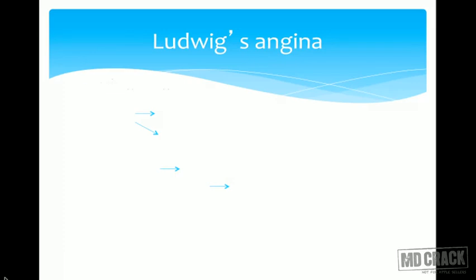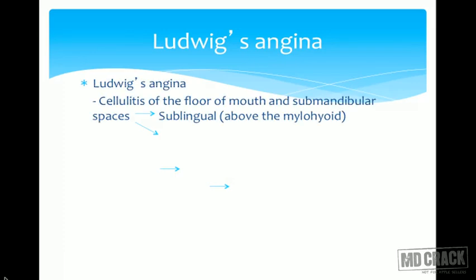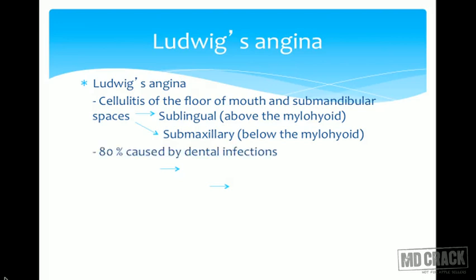Ludwig's angina is the cellulitis of the floor of the mouth and submandibular spaces. The submandibular space is divided into sublingual and submaxillary by the mylohyoid muscle. The space above the mylohyoid is the sublingual space; below is the submandibular space. 80% of Ludwig's angina is caused by dental infections.